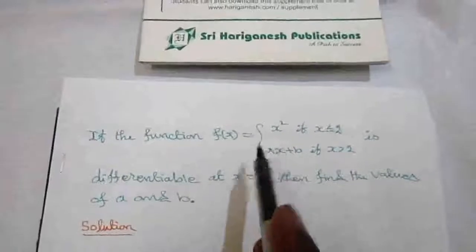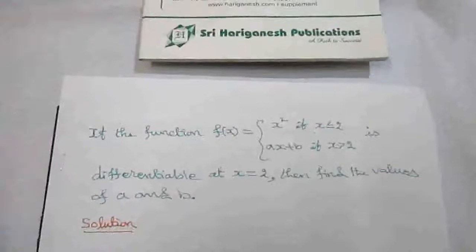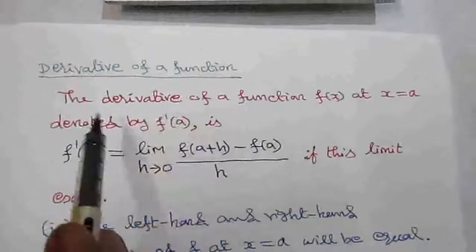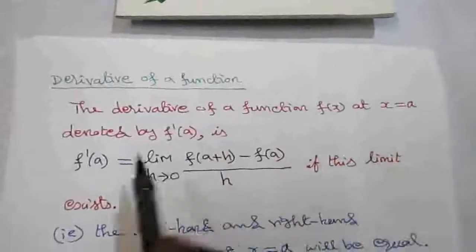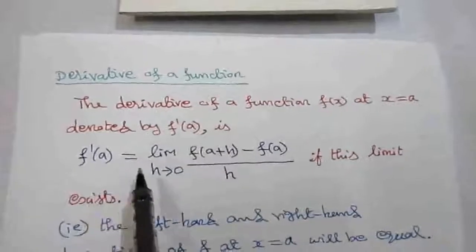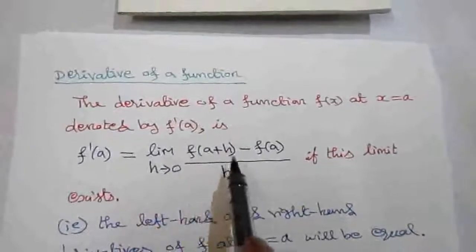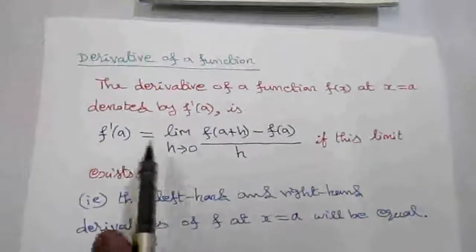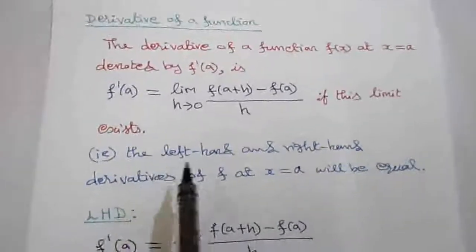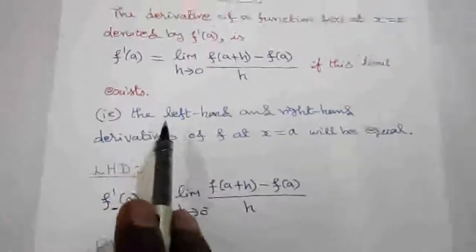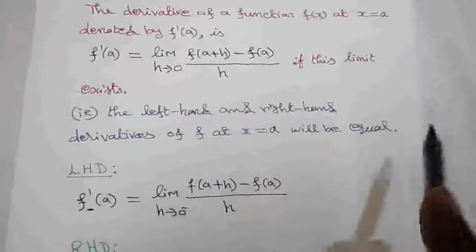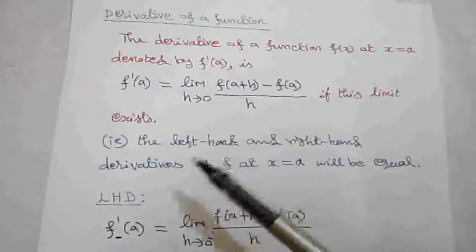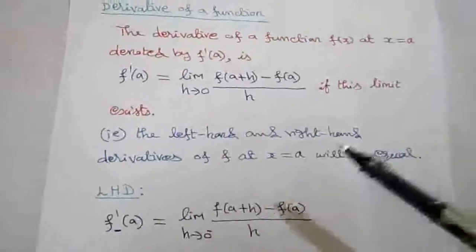For the function to be differentiable at x equal to 2, we need to find the values of a and b. First, we refer to the definition of the derivative. The derivative of a function f(x) at x equal to a, denoted by f'(a), is: f'(a) = limit h tends to 0, f(a+h) minus f(a) divided by h, if this limit exists. For the limit to exist, the left hand derivative and the right hand derivative of f at x equal to a must be equal.